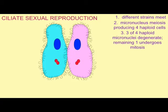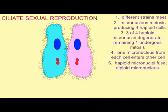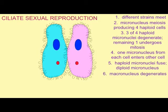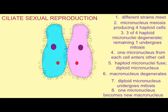At this point the macronucleus will degenerate so that a cell only possesses the newly formed diploid micronucleus. It divides by mitosis and one of the daughter nuclei then enlarges to become a new macronucleus. And so this is how ciliates reproduce sexually.